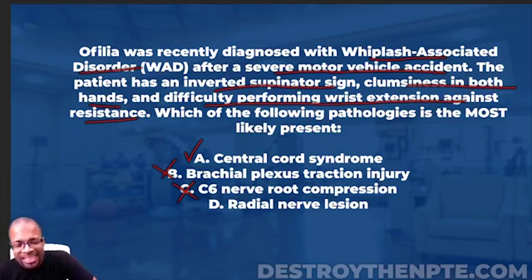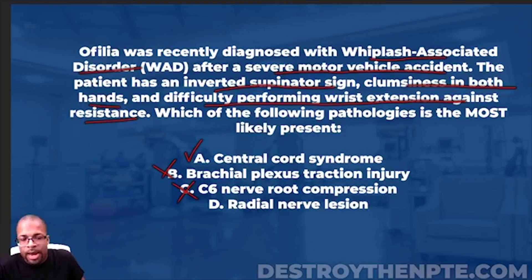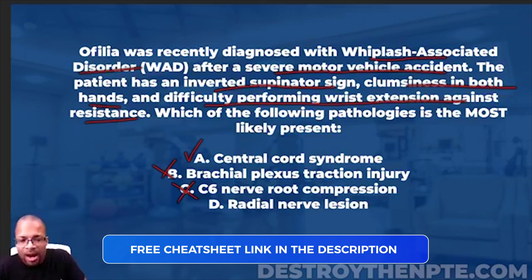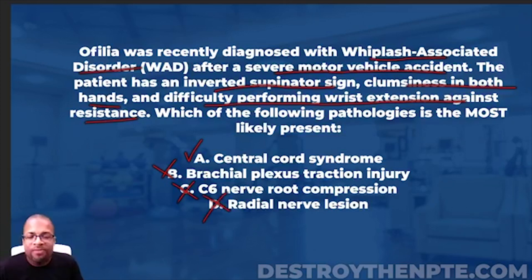Radial nerve lesion — the radial nerve is a peripheral nerve, making it a lower motor neuron structure. You would not expect an inverted supinator sign with a radial nerve lesion. Grip strength weakness is possible, but not necessarily bilateral clumsiness. Difficulty with wrist extension against resistance does fit, but that's the only sign that matches. When only one out of all the signs fits, it's the wrong answer. Big X on radial nerve lesion.